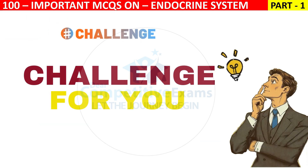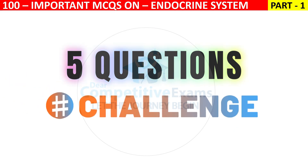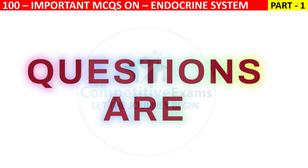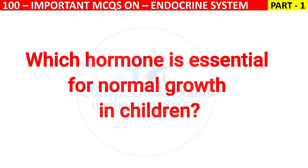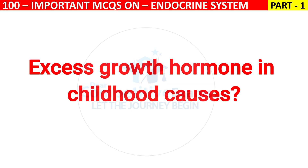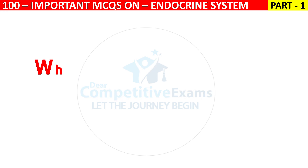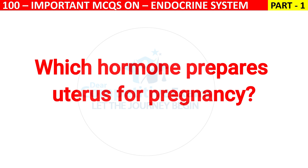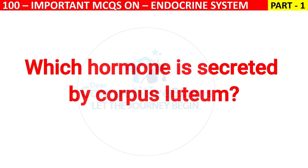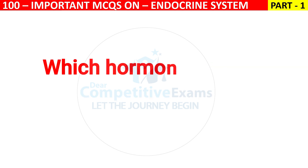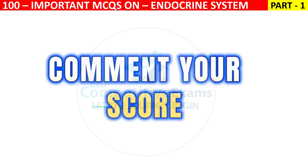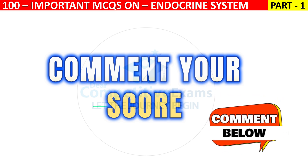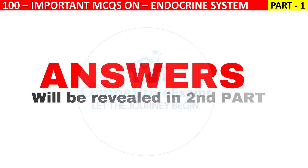Dear friends, now it's time for 5 challenging questions. Let's see whether you can answer these. Question 1: Which hormone is essential for normal growth in children? Question 2: Excess growth hormone in childhood causes? Question 3: Which hormone prepares the uterus for pregnancy? Question 4: Which hormone is secreted by the corpus luteum? Question 5: Which hormone causes milk production? If you know the answers, please let me know in the comment section. The answers, along with new challenging questions, will be revealed in the second part of this endocrine system MCQ series.